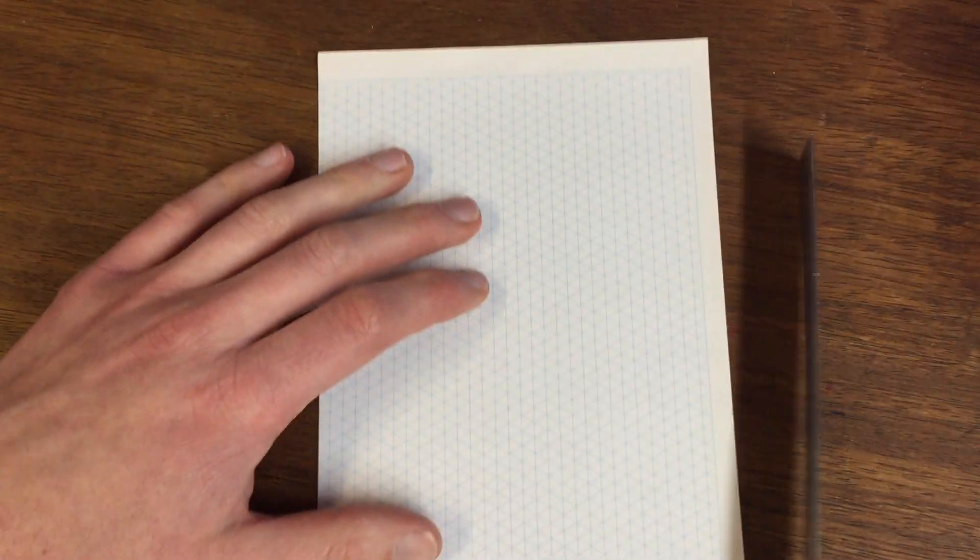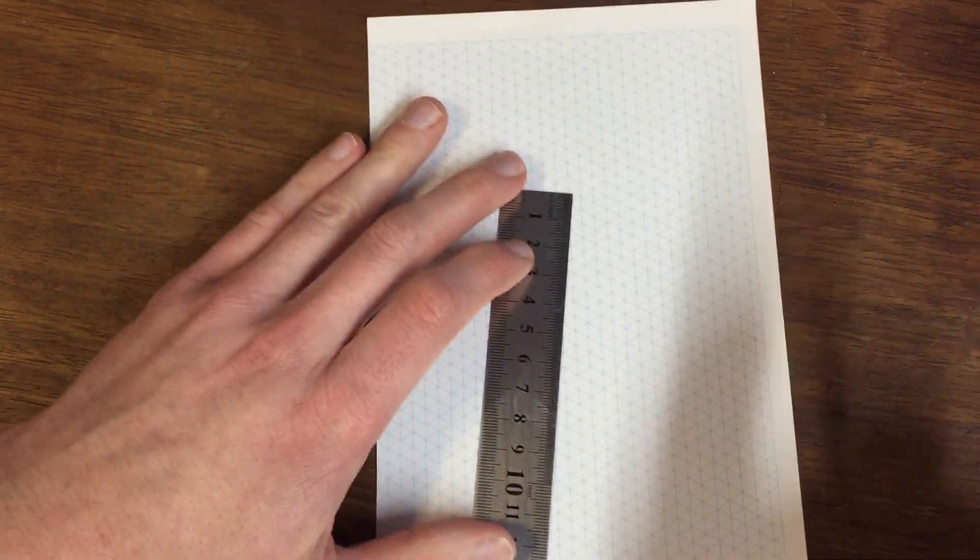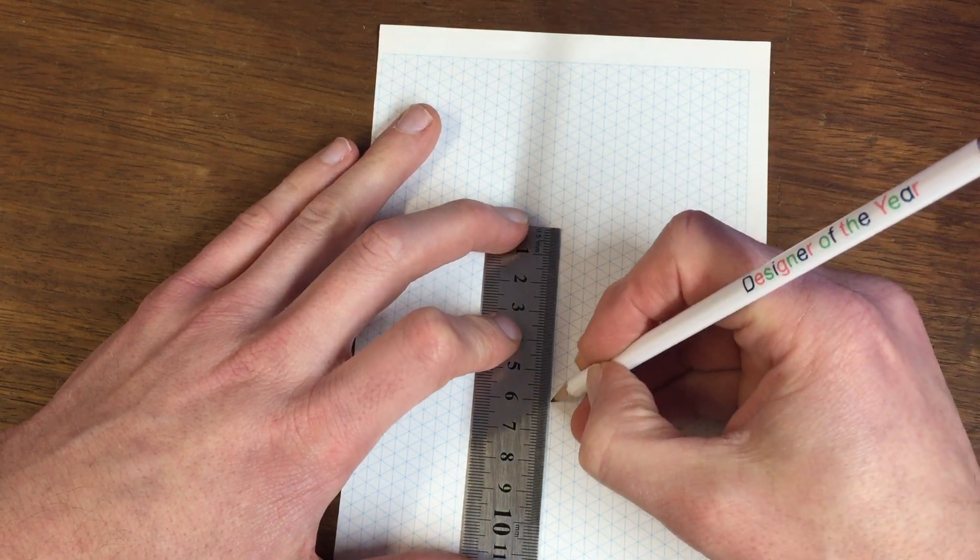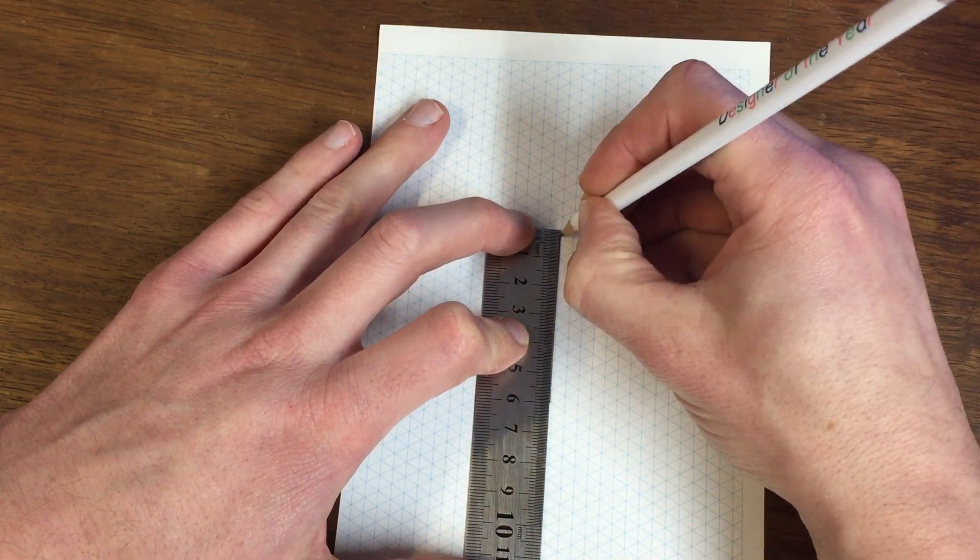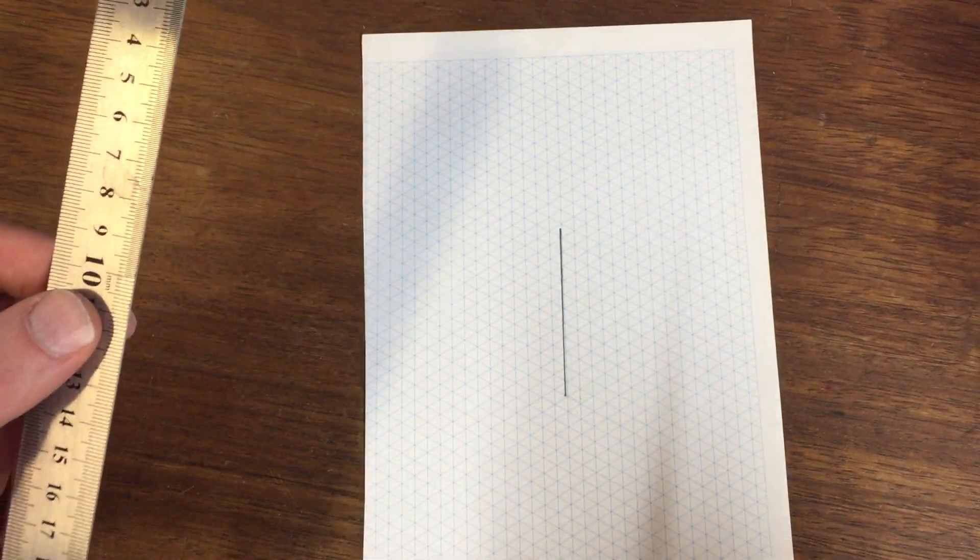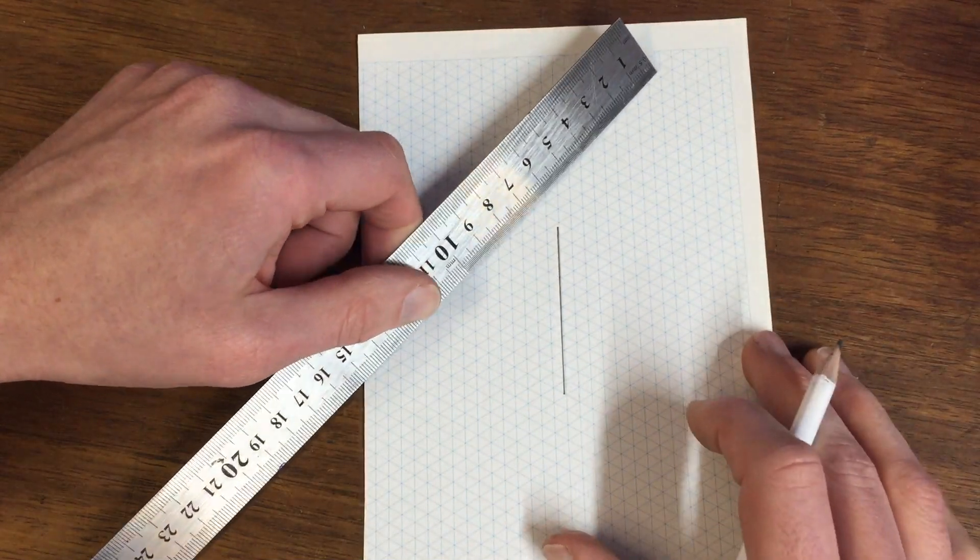First thing I would do, roughly in the center of your piece of paper, do a vertical line with a nice sharp pencil about six centimeters. I would do it lightly first of all in case you make a mistake. I'm doing it a bit more heavily so you can see it on the screen.